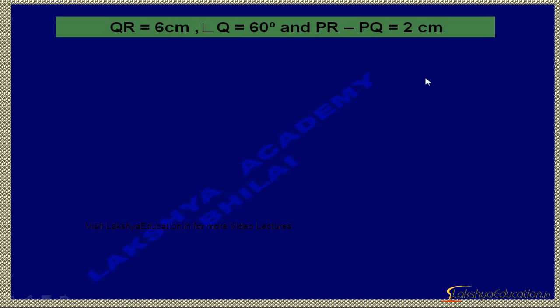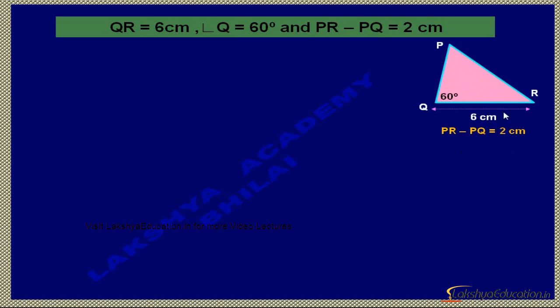Draw triangle PQR where angle Q is equal to 60 degrees and QR is equal to 6 cm, and PR minus PQ is equal to 2 cm. That means this side is less than this side by 2 cm.